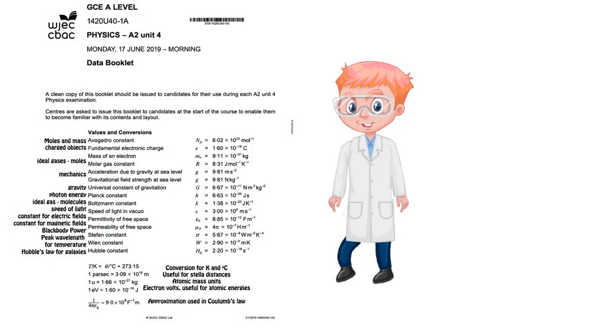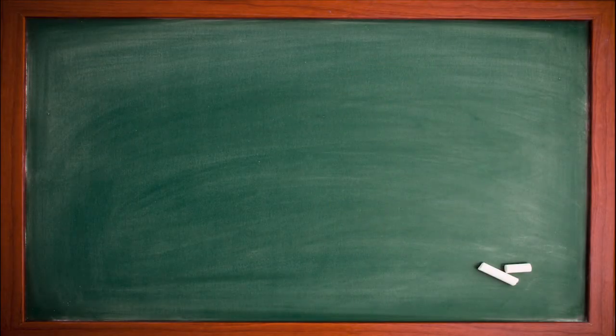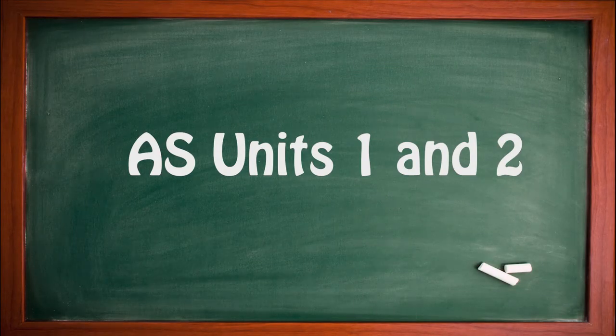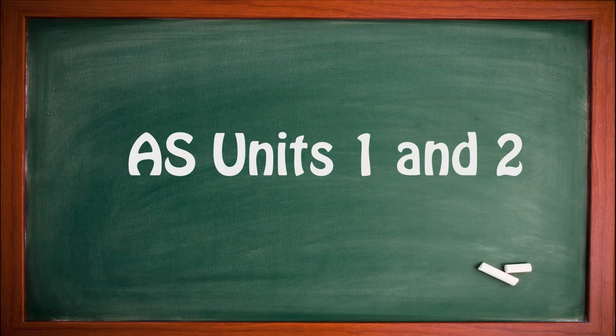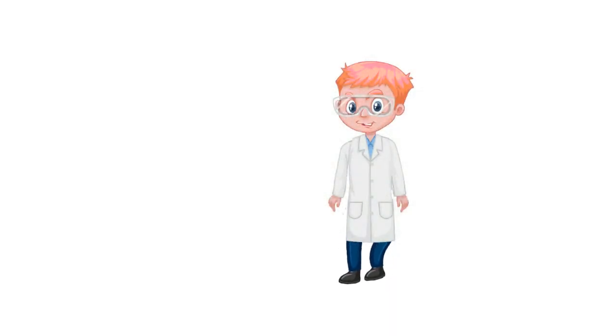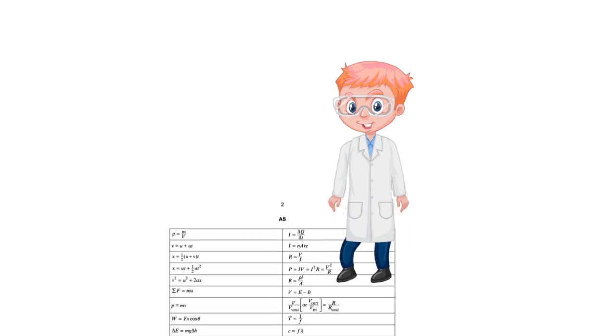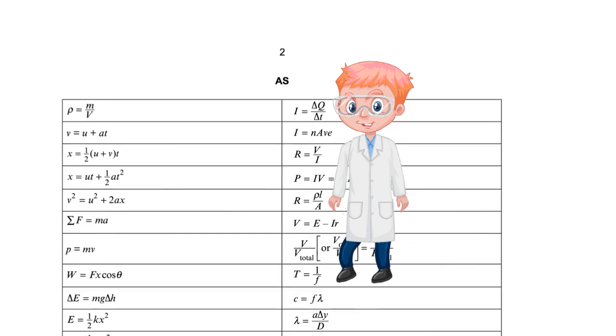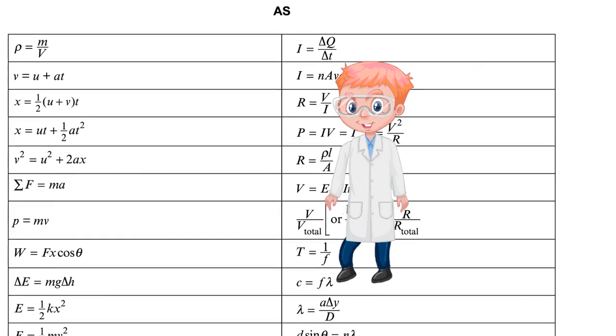The first page of the actual data booklet is on the front cover and this has our useful constants and some conversions. On to the actual equations, what I want to do here is try and group the equations together as much as possible rather than go through each one individually. The first column on this page is the equations you need for unit one and the second column is the equations you need for unit two.